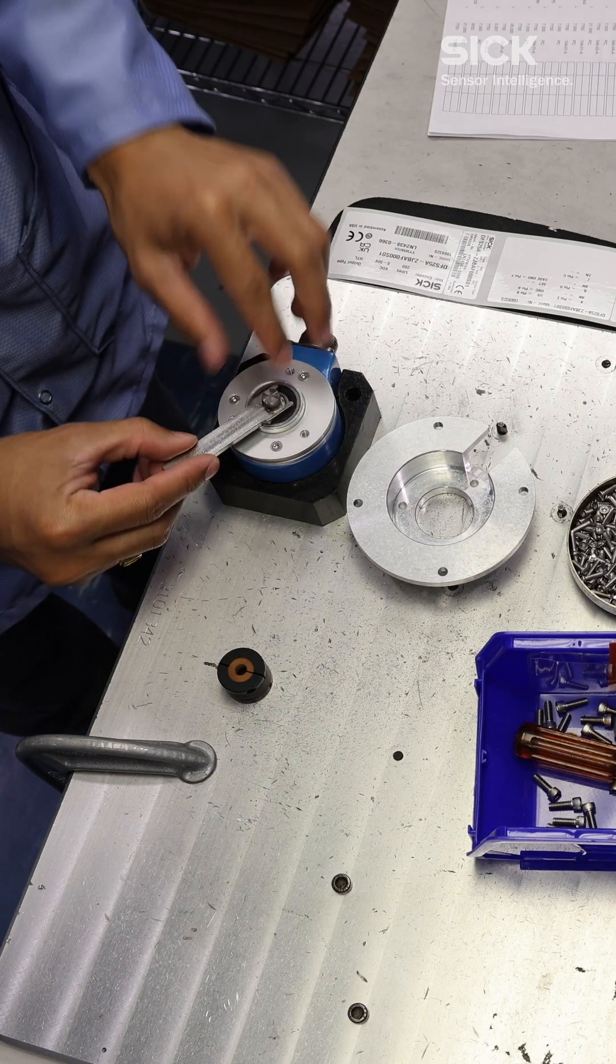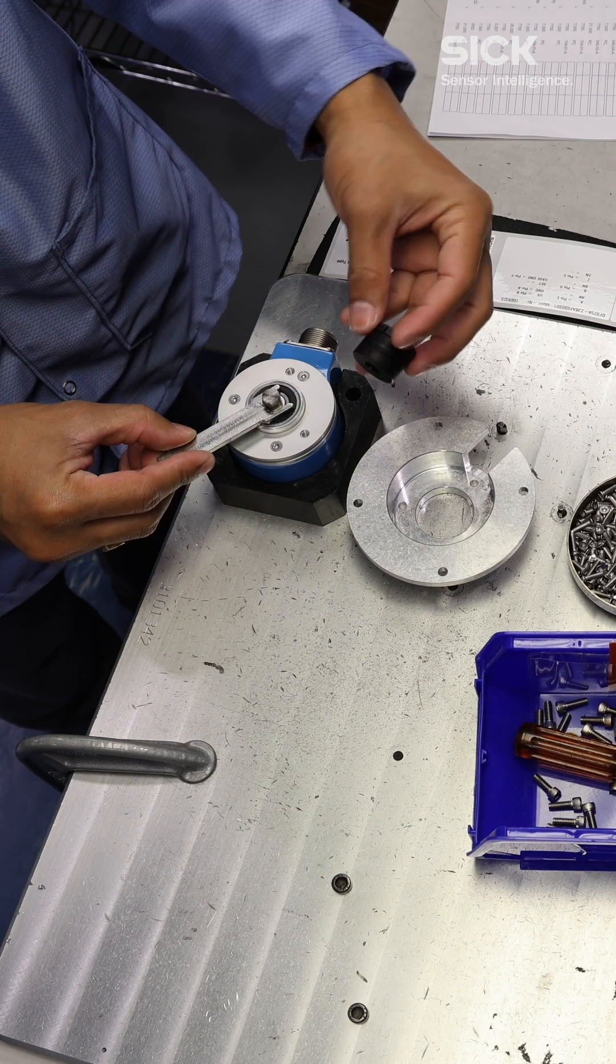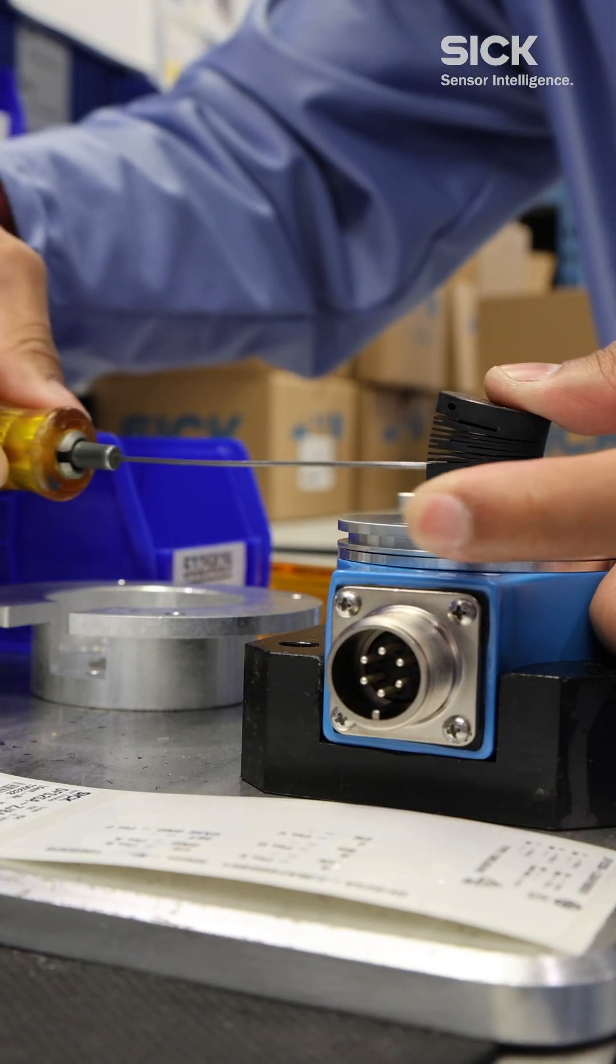Using a precision spacer, a rubber coupler is added. This interfaces with a moving surface once the encoder goes into use.